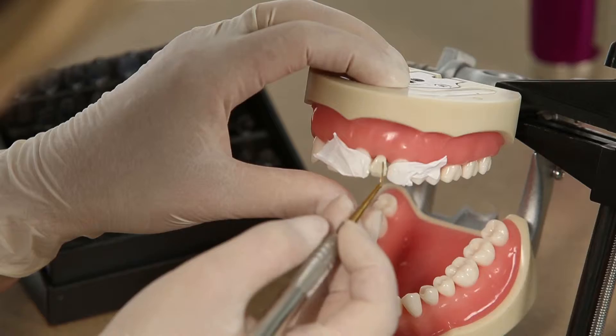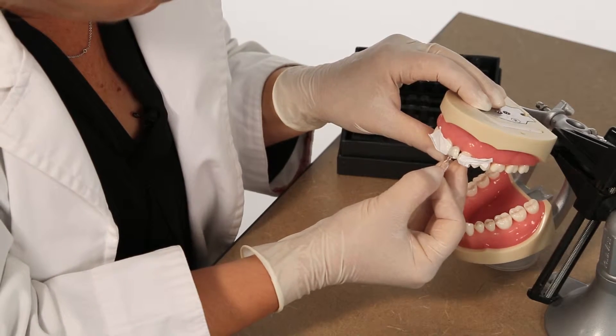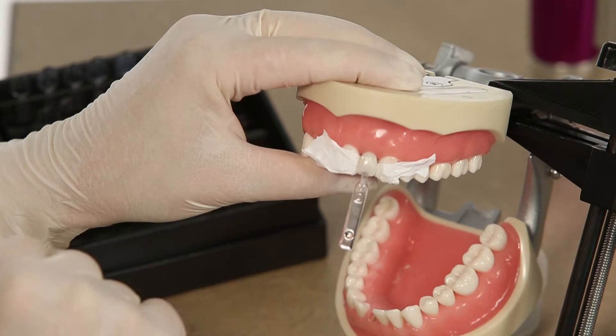Apply composite to the tooth and fill in the gap. Once the desired shape is achieved, press the Uveneer template onto the composite.